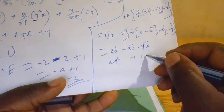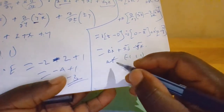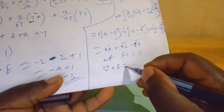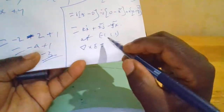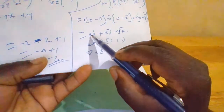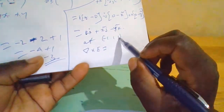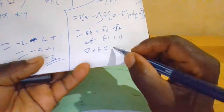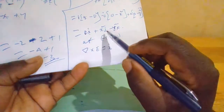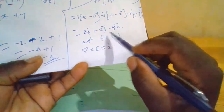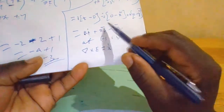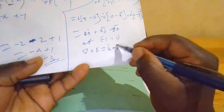At the point (-1, 1, 1), we substitute: z = 1, x = -1 so x² = 1, and y = 1 so y² = 1. Therefore curl E at (-1, 1, 1) equals î - ĵ - k̂.